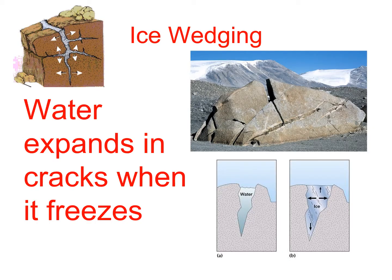Ice wedging is when water goes into cracks of rock and then it freezes. When water freezes, it takes up more space — it expands. You may have noticed this when you try to freeze a bottle of water and it won't stand up because the bottom's all warped. That's because it blew out the bottom of your water bottle when it was freezing — you're supposed to pour a little bit out before you freeze it. So when this is happening in the cracks of rock, it breaks the rock even more. That's called ice wedging.